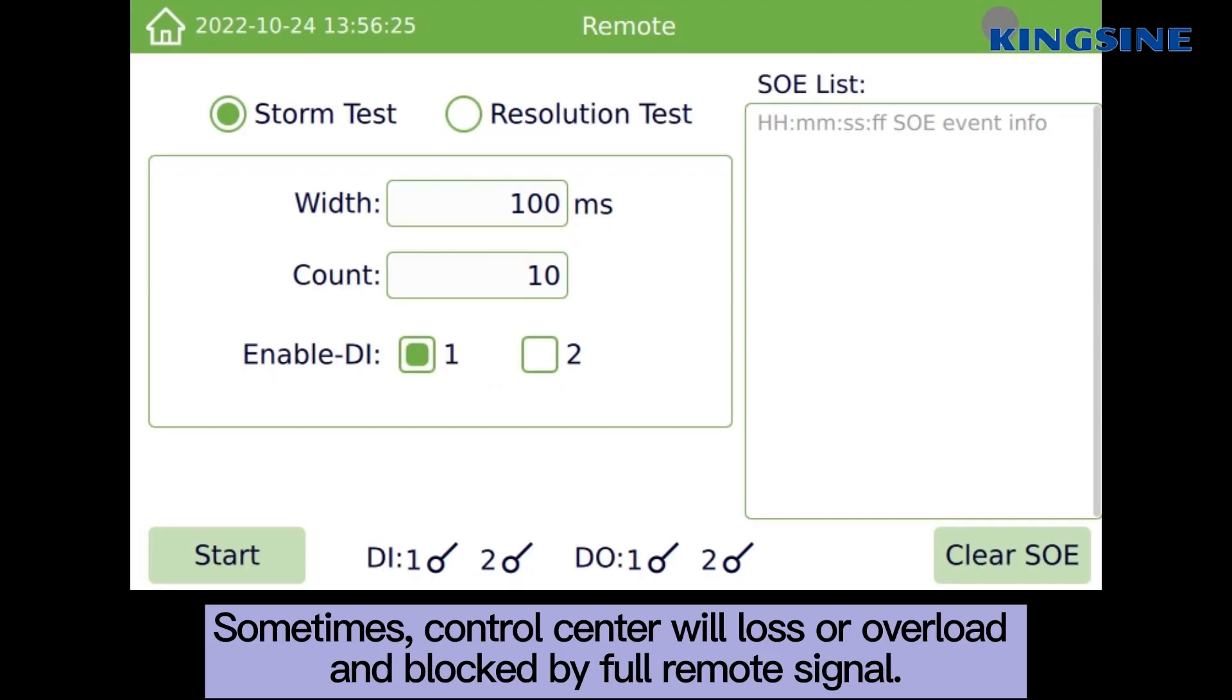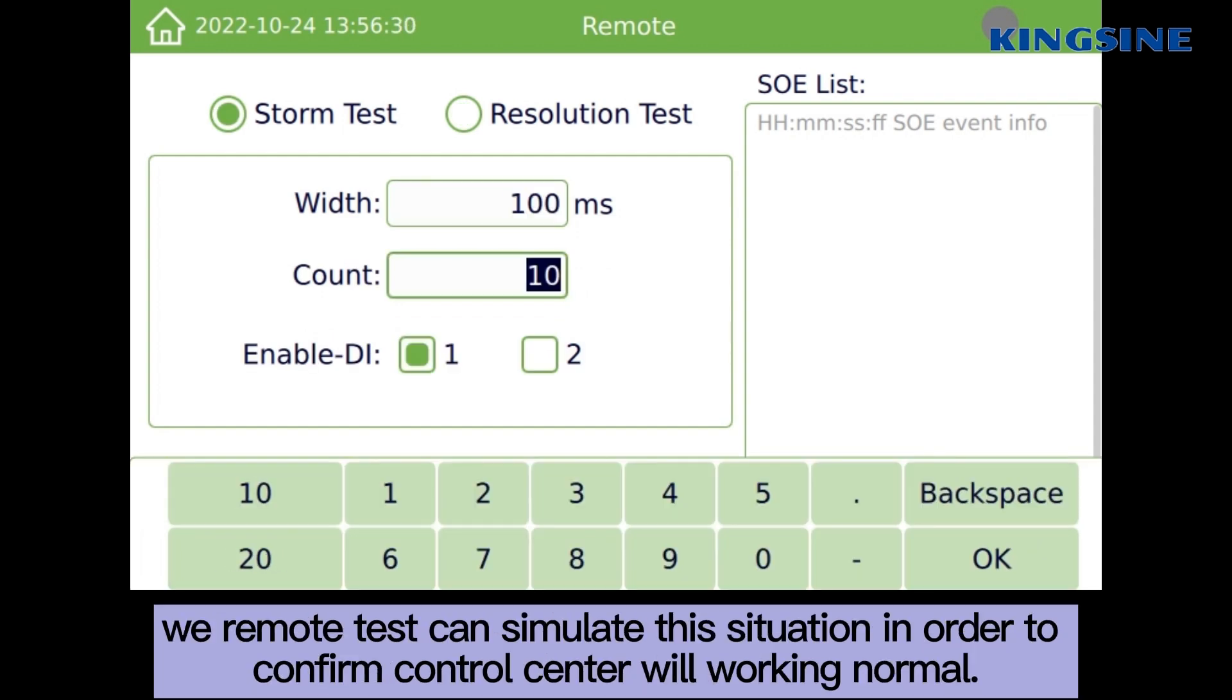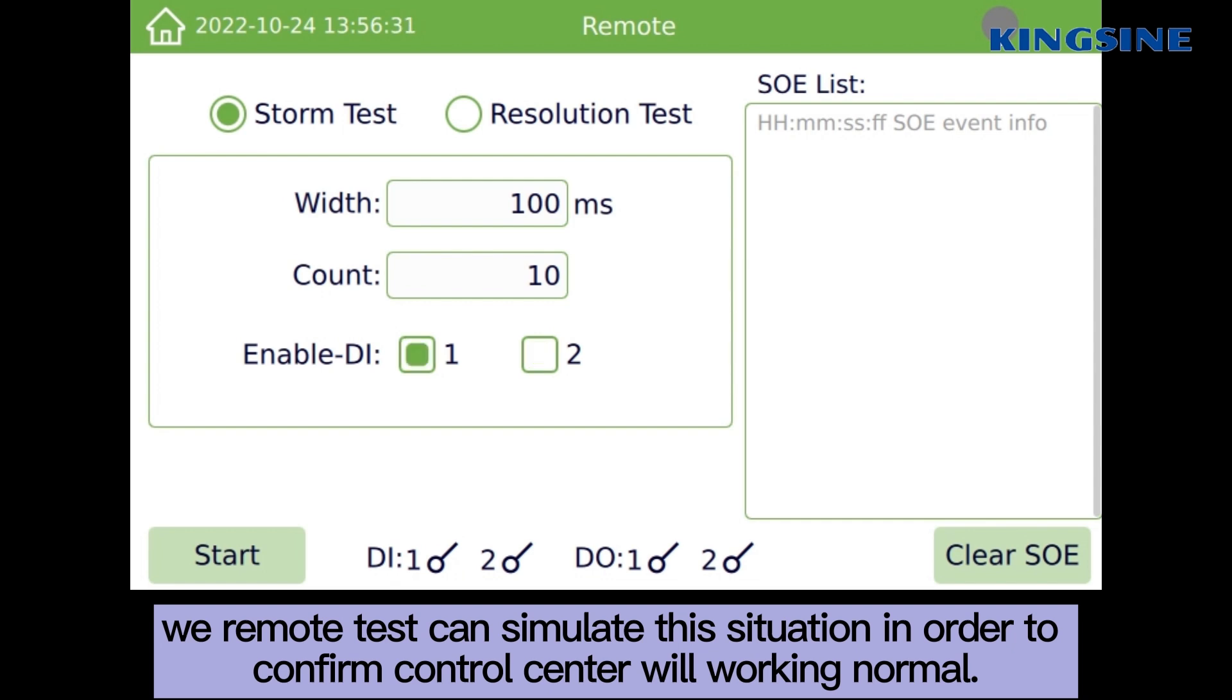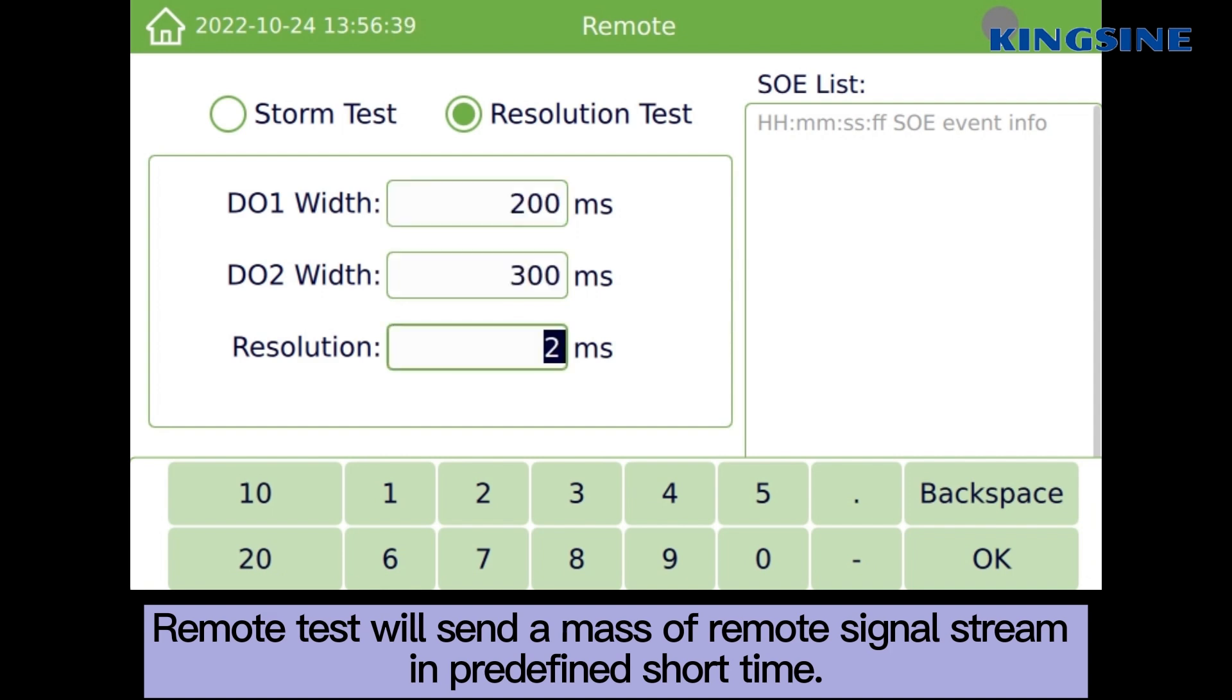Sometimes, control center will allow for overload, and block before remote signal, or it may record wrong delay time of remote signal. We remote test can simulate this situation in order to confirm control center will work in normal. Remote test will send a mass of remote signal stream in predefined short time.